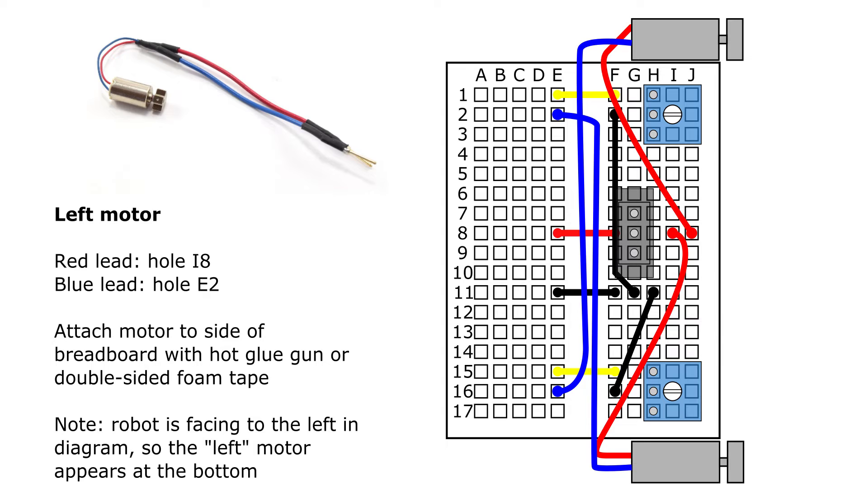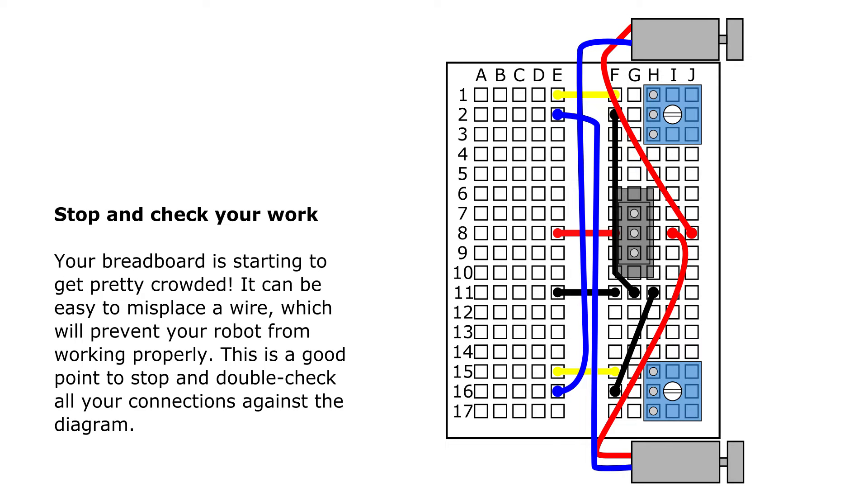After that, you're going to connect the left motor. Follow a very similar procedure, where you attach it to the side of the robot using glue or double-sided foam tape. Make sure the weight is free to spin. And then connect the red lead to hole I8 and the blue lead to hole E2. Now, you'll probably notice that your breadboard is starting to get pretty crowded. It might be kind of hard to get your fingers in there and get everything in the right place. So this is a very good spot to stop and check your wiring. We'll talk a little more about this later, but the most common mistake when building this robot is just to have one wire misplaced somewhere and then it can be kind of confusing when your robot isn't working or isn't behaving properly. So just as you're going along, you want to be very careful to make sure you're putting everything in the place to exactly match the diagram.